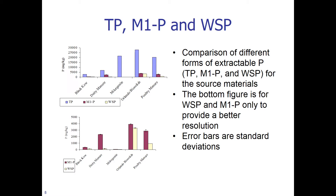Here is a comparison of different forms of extractable P — total P, Mehlich-1 P, and water-soluble P — for the source materials. The bottom figure shows only water-soluble P and Mehlich-1 P to provide better resolution. Error bars represent standard deviations, and you can see how different these values can be across sources.